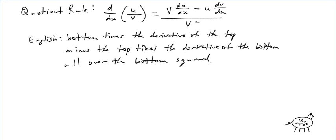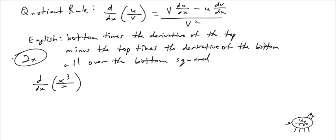Let's test this out quickly. d/dx of x³ over x — well, you already know that's the same as d/dx of x², and the derivative comes out to be 2x. So let's use the quotient rule and see if it works.